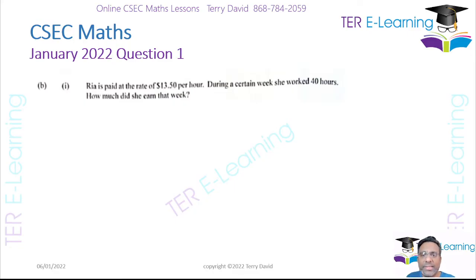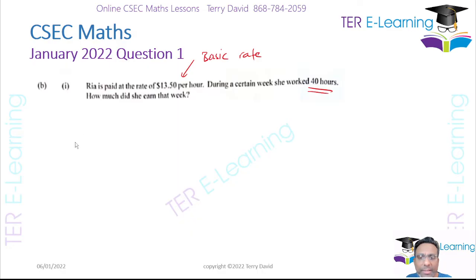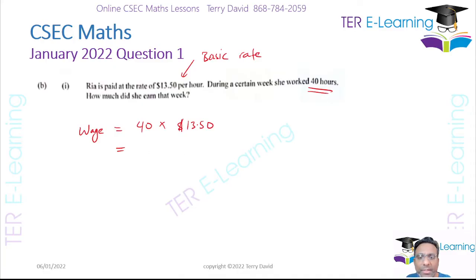This next part of the question — Ria earns at a rate of $13.50 per hour, that's her basic rate. During a certain week she works 40 hours. Her wage is going to be 40 hours multiplied by $13.50 per hour. So that is 40 multiplied by 13.50, and I'm getting $540. That's how much she earns.